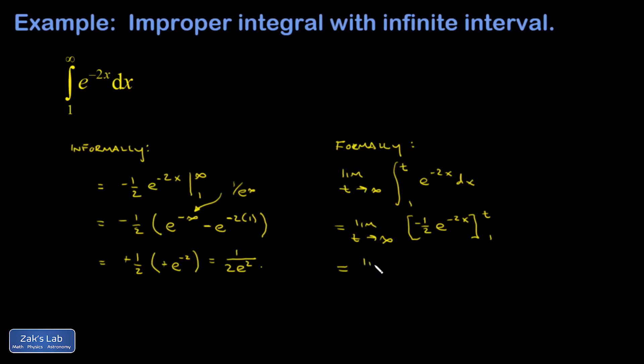And I end up with limit as t goes to infinity: negative 1 half e to the negative 2t plus 1 half e to the negative 2.